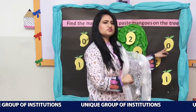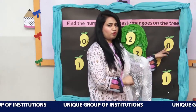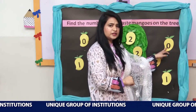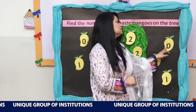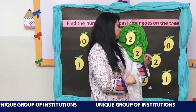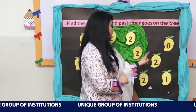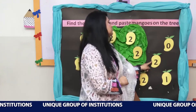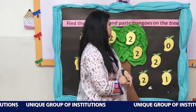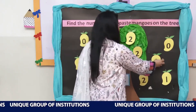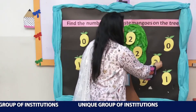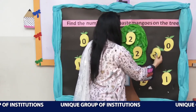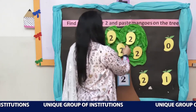Is this 2? No, this is number 0. Is this 2? Yes, this is 2. And we will paste this mango on the tree.